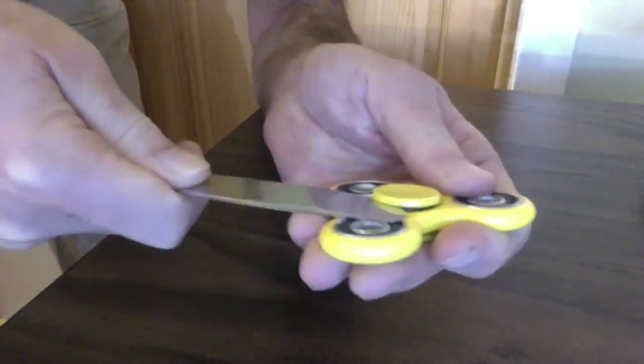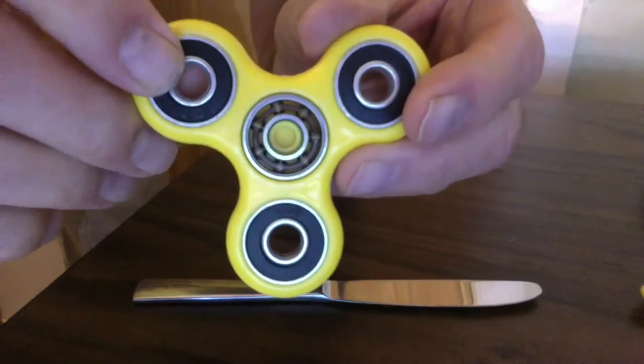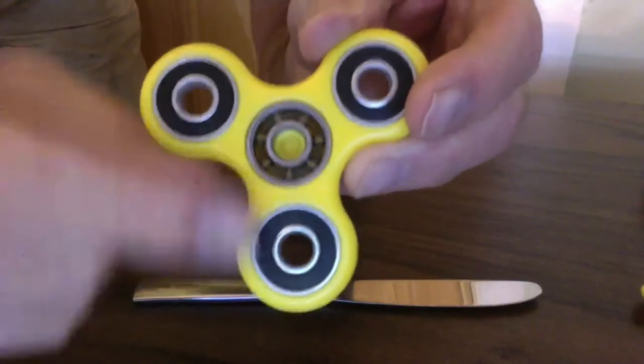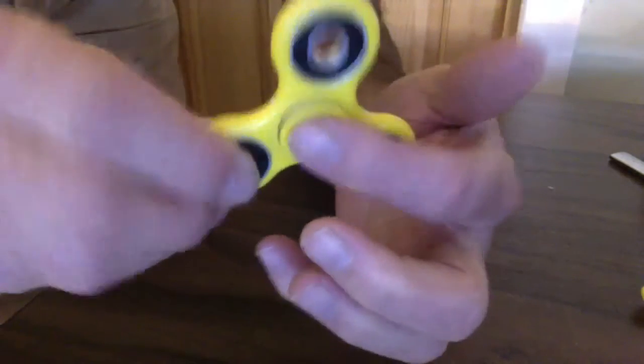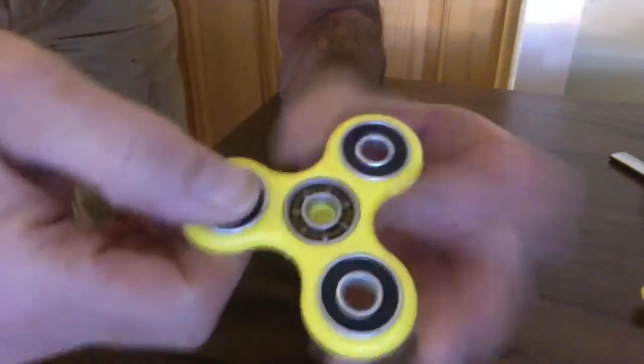Now you can see the bearings that make it spin so well. The bearings in the middle are different than the bearings on the edge. The bearings in the middle are extremely smooth - when you hold the plastic, it's pressed into the middle and that middle bearing stays still and it's the outer race that moves.